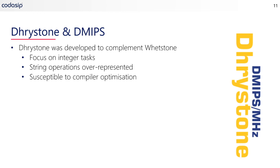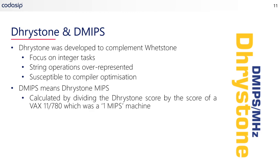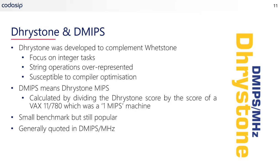Dhrystone has been criticized because string operations were a bit over-represented, and also some parts of the benchmark may be pre-computed by a compiler — meaning it may be susceptible to compiler optimization, so the benchmark tells you more about how good the compiler is rather than how good the processor is. DMIPS, which is more frequently used, means Dhrystone MIPS. This is calculated by dividing a Dhrystone score by the score of a VAX 11780, which was a one MIPS machine — a very important mini-computer in the 1980s. In fact, they used to run SPICE simulations on one. DMIPS is a small benchmark that's still popular and generally quoted by IP vendors in DMIPS per megahertz.